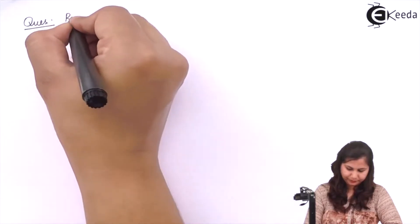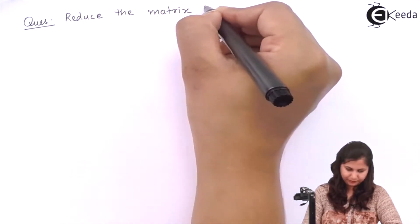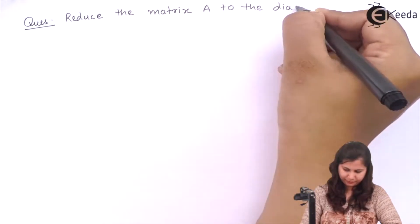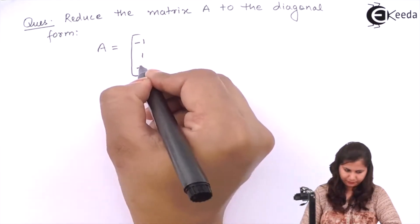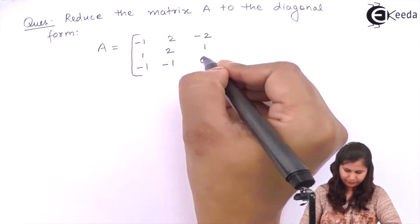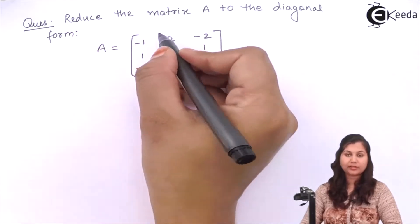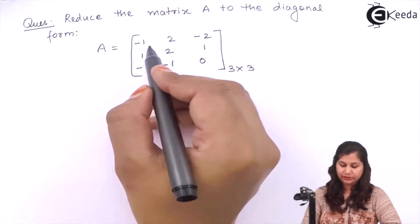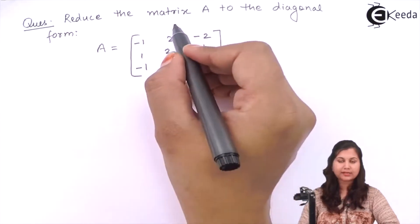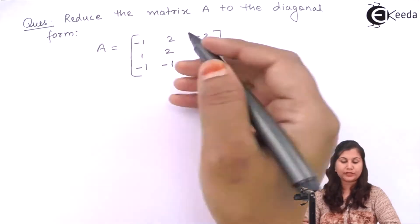Hello friends! In this video we are going to solve a problem on how we can diagonalize a matrix. So let's take a problem. Our problem is to reduce the matrix A, where A is a 3x3 matrix having 3 rows and 3 columns. We have to reduce this matrix A to the diagonal form.